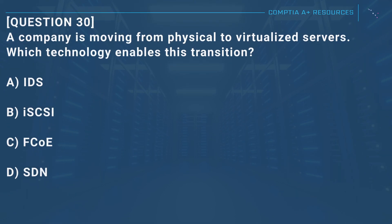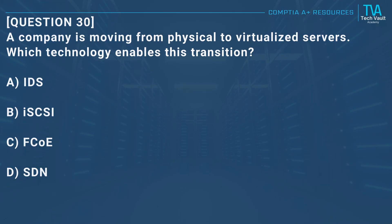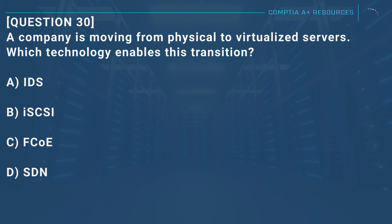Question 30: A company is moving from physical to virtualized servers. Which technology enables this transition? A, IDS. B, iSCSI. C, FCoE. D, SDN.